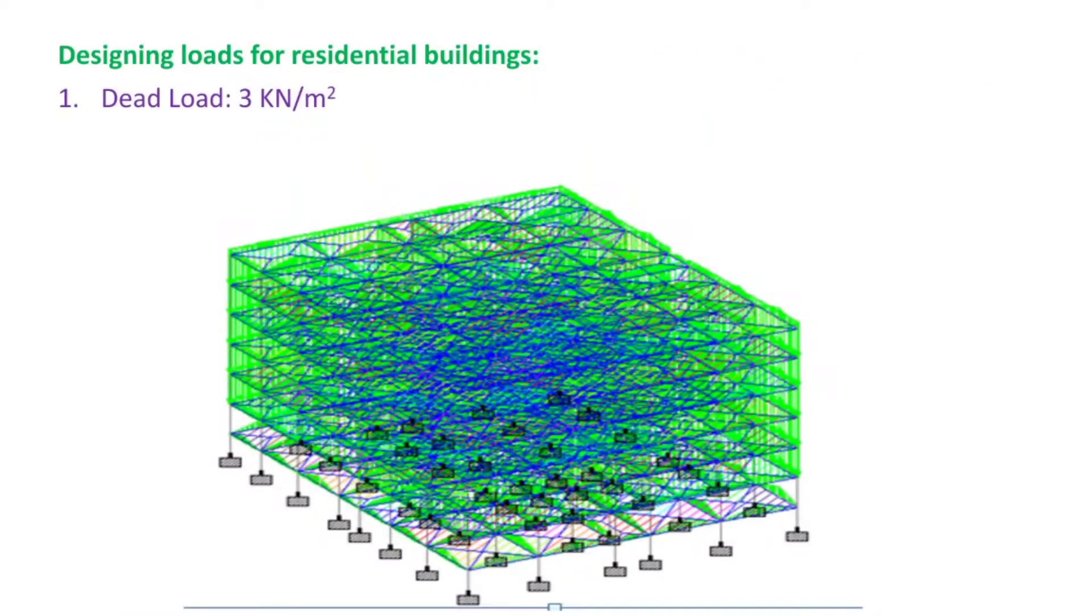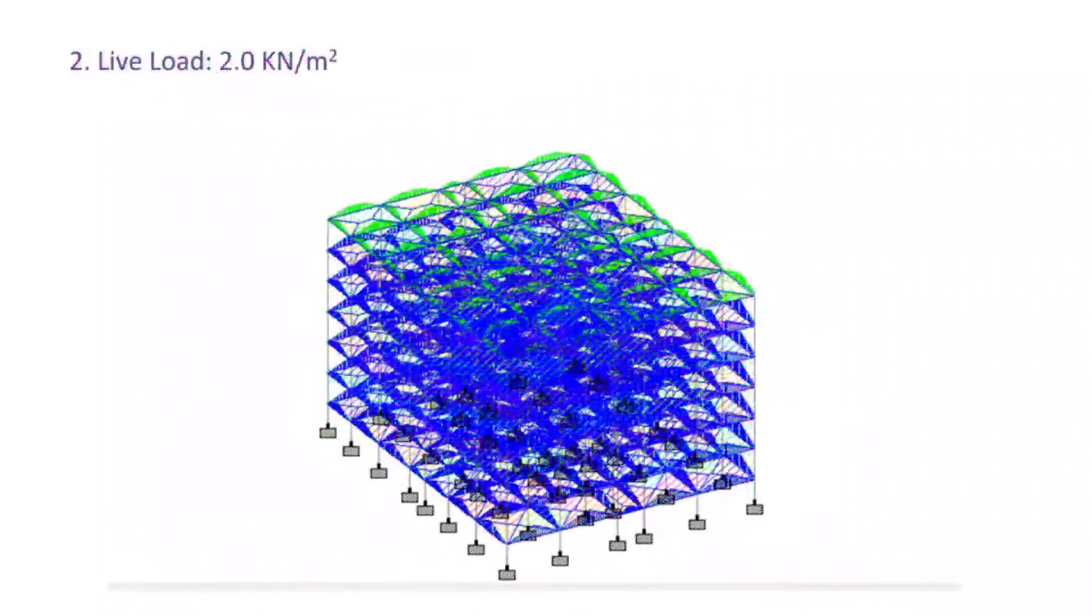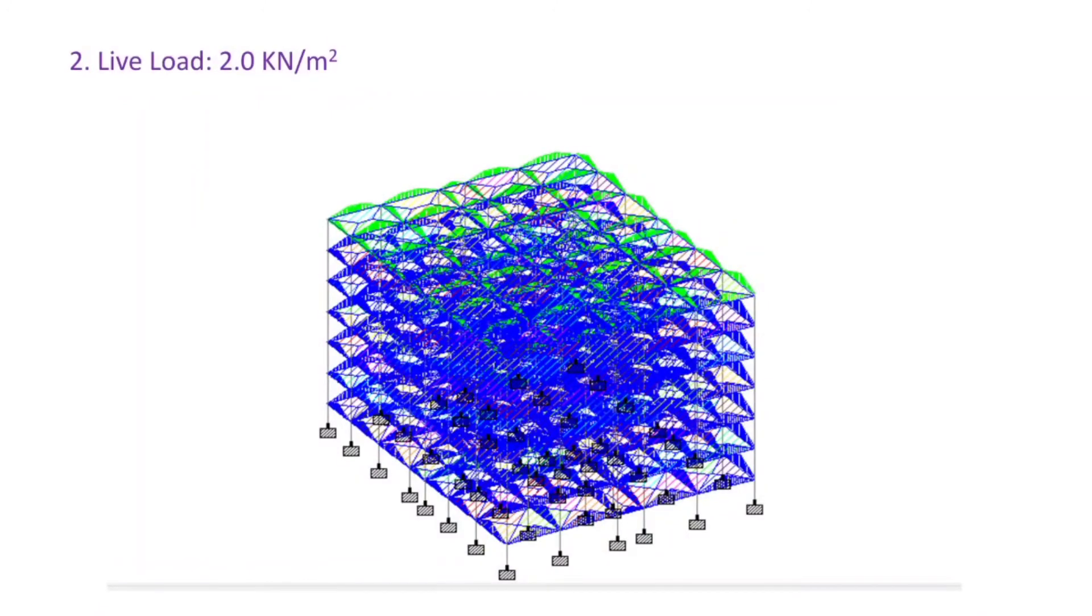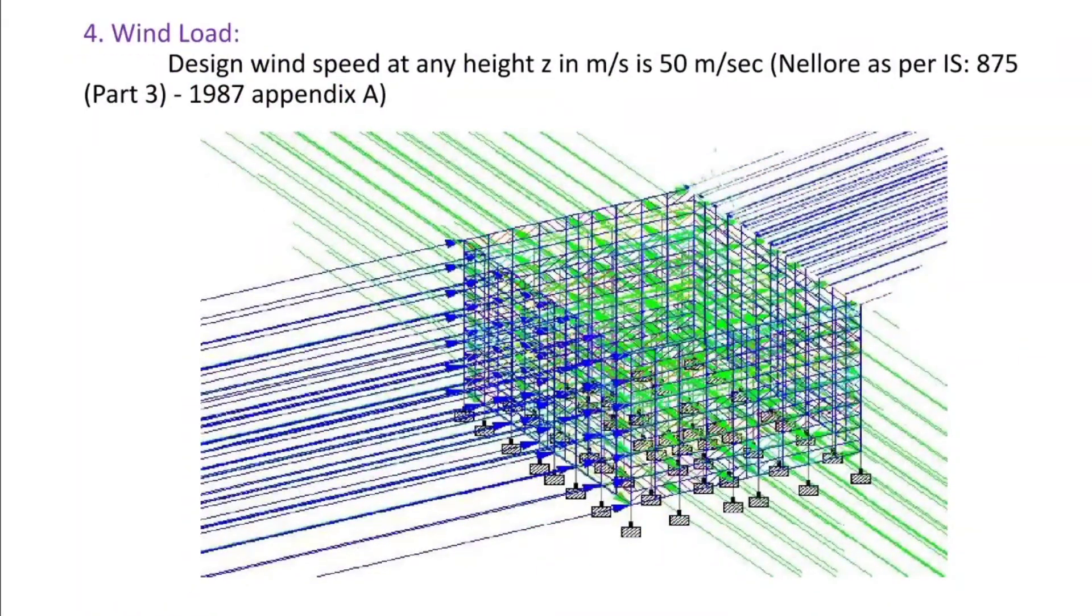The designing loads for the residential building: live load 3 kN per meter square. The figure shown in the slide is taken from STAAD Pro and this is the live load picture. We have taken it as 2 kN per meter square and this is the floor load 1 kN per meter square and this is the wind load.